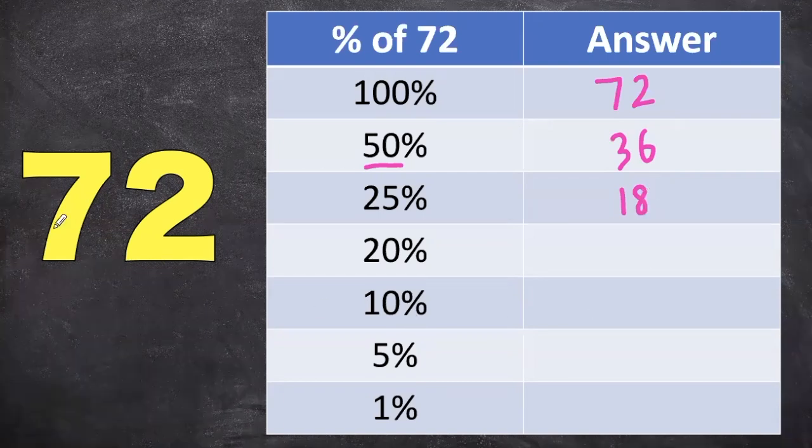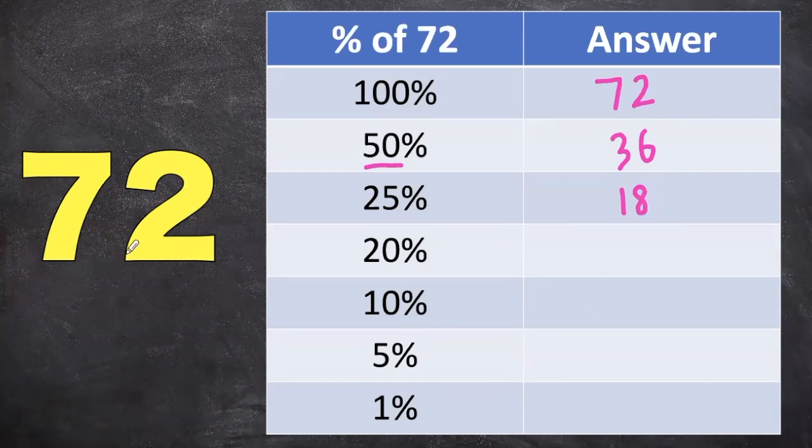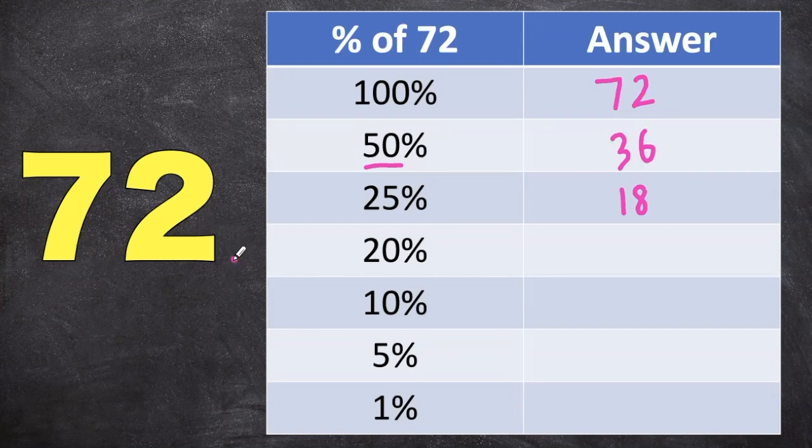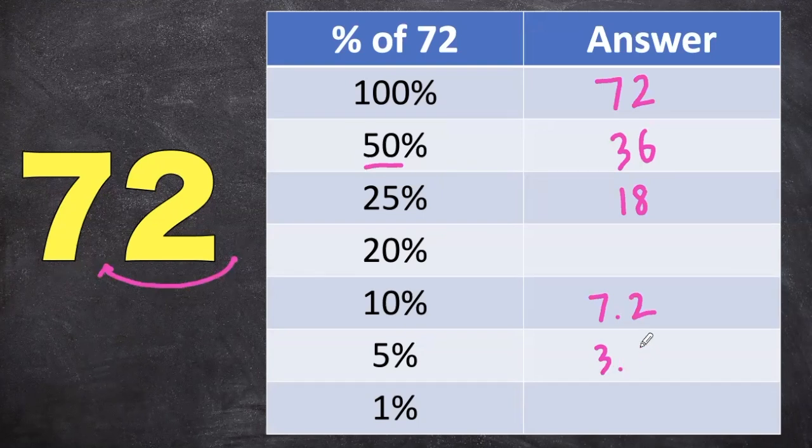Or you can think of it as breaking down 72 into four parts. Now I'm going to skip 20 for one second and then go to 10%. For 10%, it's really easy. Make sure you have the decimal to the right of the last number and then move it over one spot. So in this case, 10% of 72 is just 7.2. And then 5% is again half of 10%, so we know that it is 3.6.